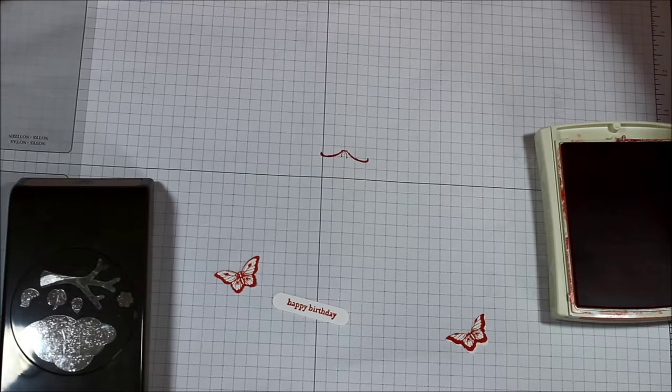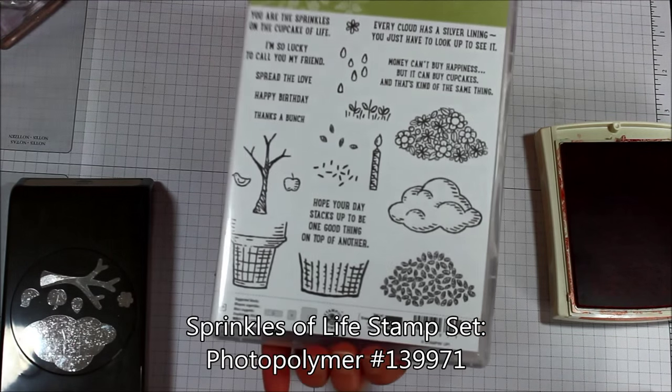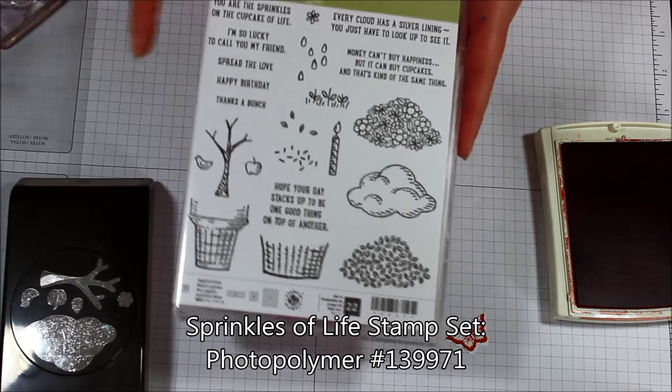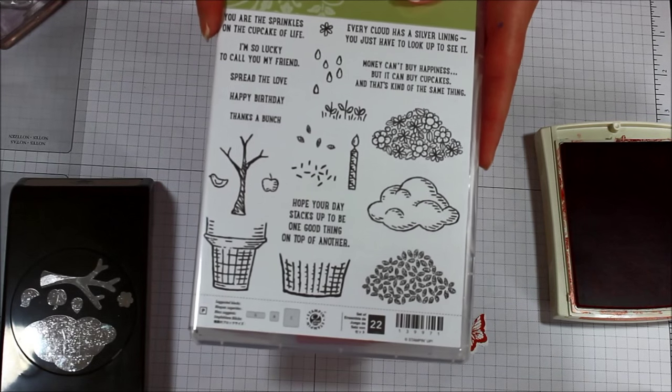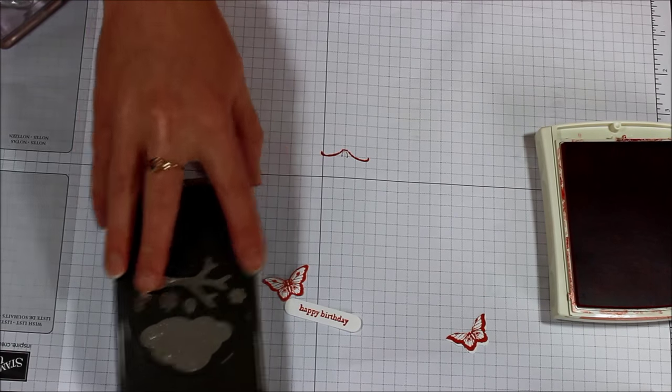Now I'm going to use another one of my favorites. This is the Sprinkles of Life stamp set. Love, love, love, love, love this one. It's the Ronald McDonald House stamp set. I can't put it down. It's in the new 2015-2016 catalog. And it coordinates with the Tree Builder Punch here.